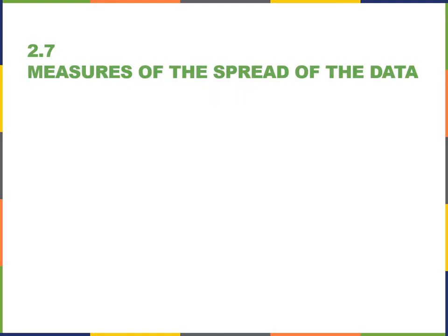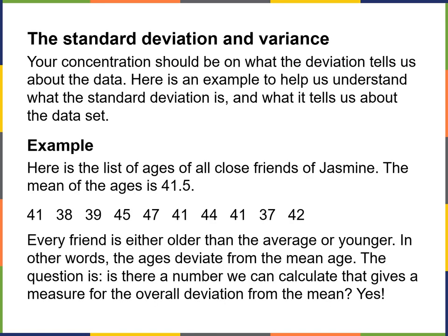Let's take a look at the measures of the spread of the data. We have what are called standard deviation and variance. Your concentration should be on what the deviation tells us about the data. Anytime we look at data there's going to be a variance and there's going to be a standard deviation. Here's an example to help understand what standard deviation is and what it tells us about our data set.